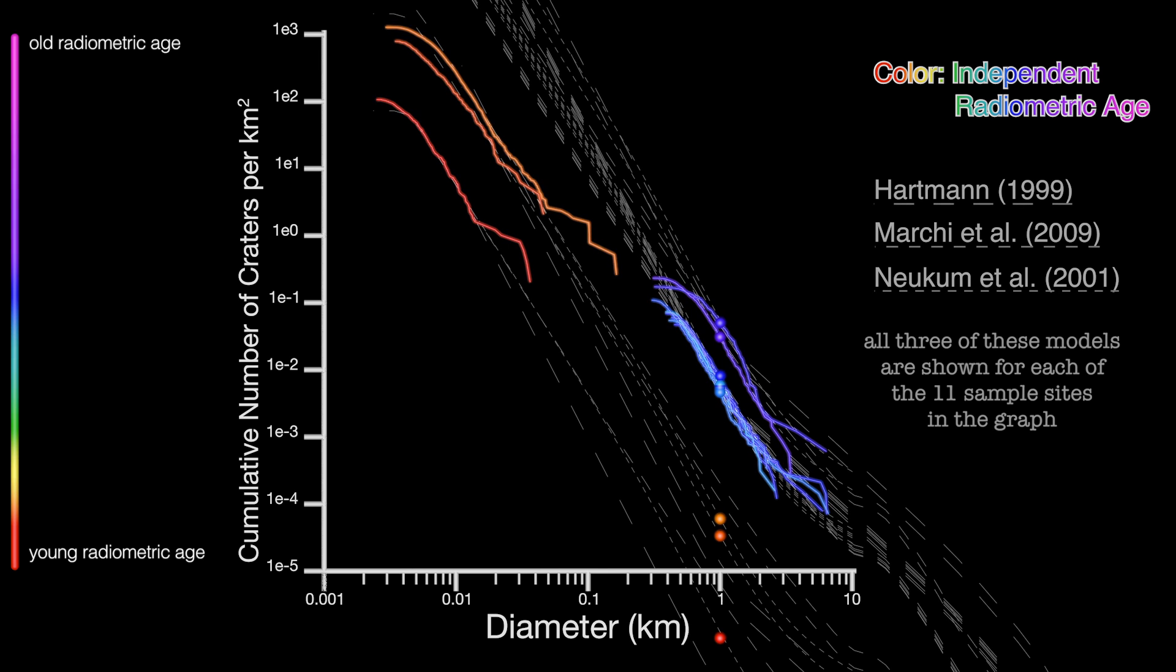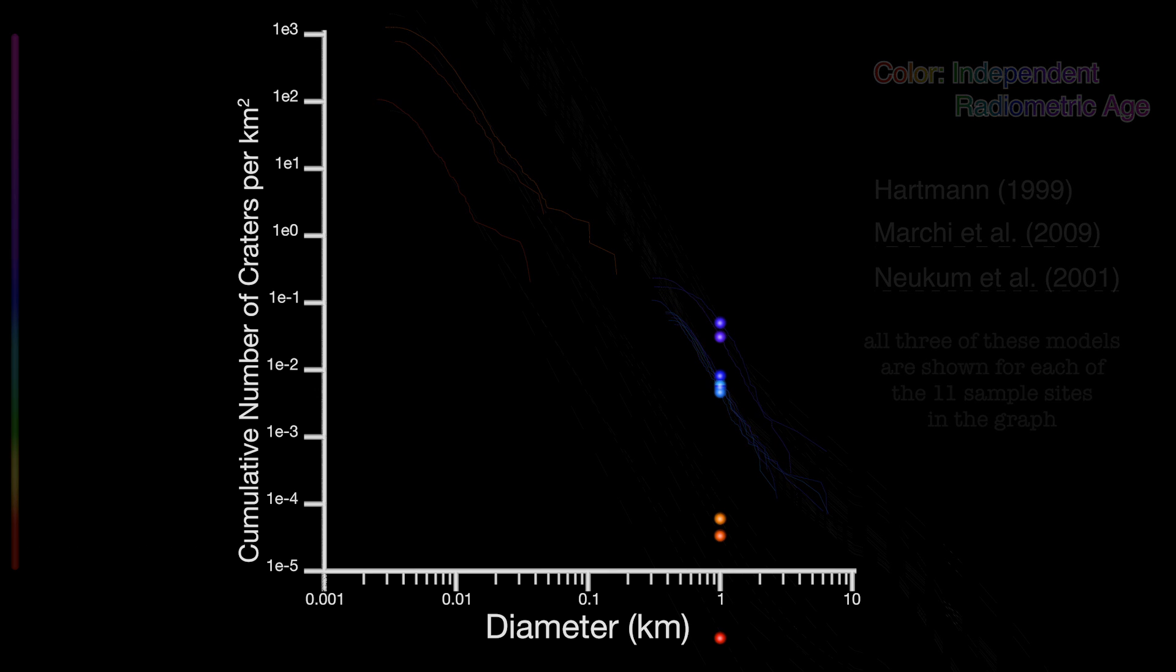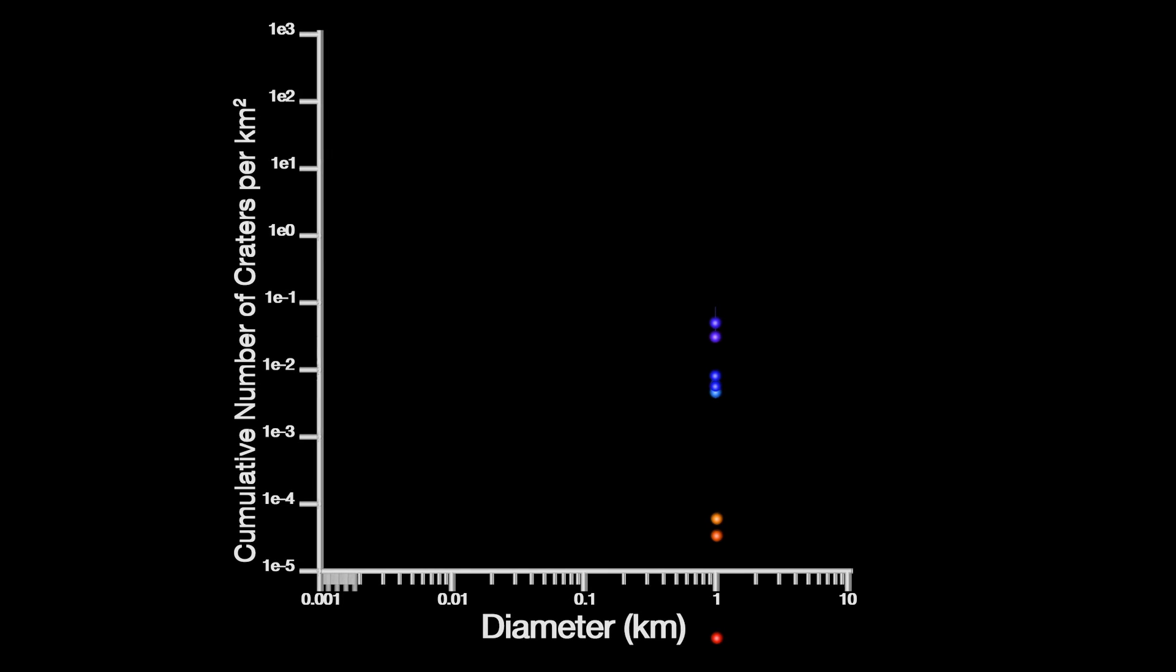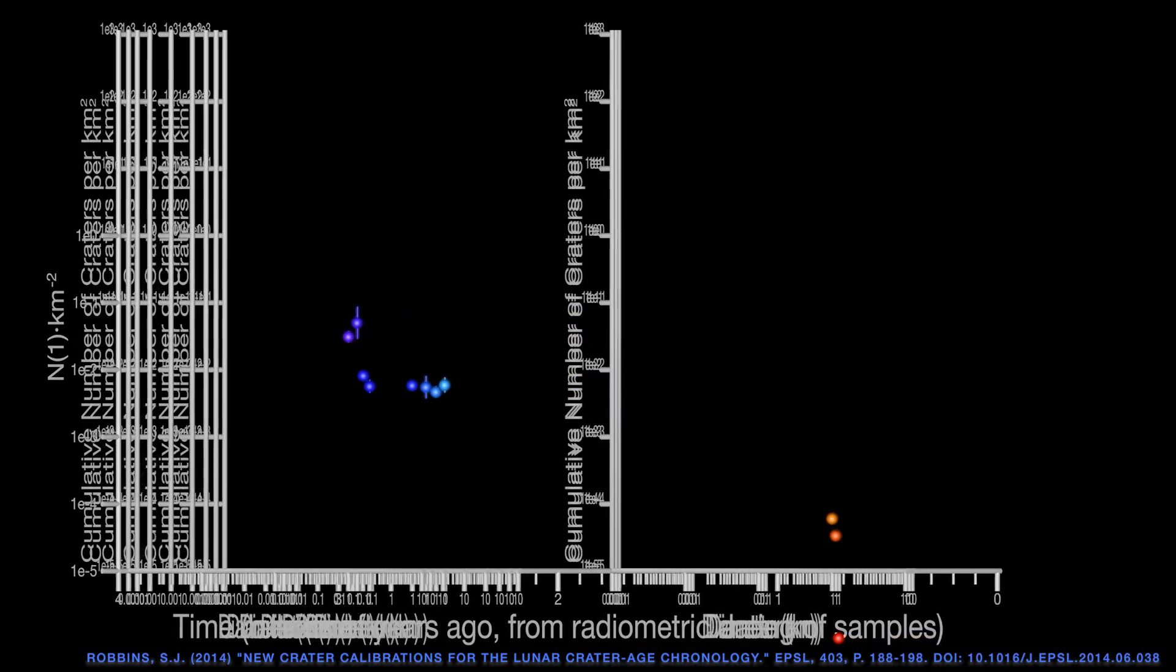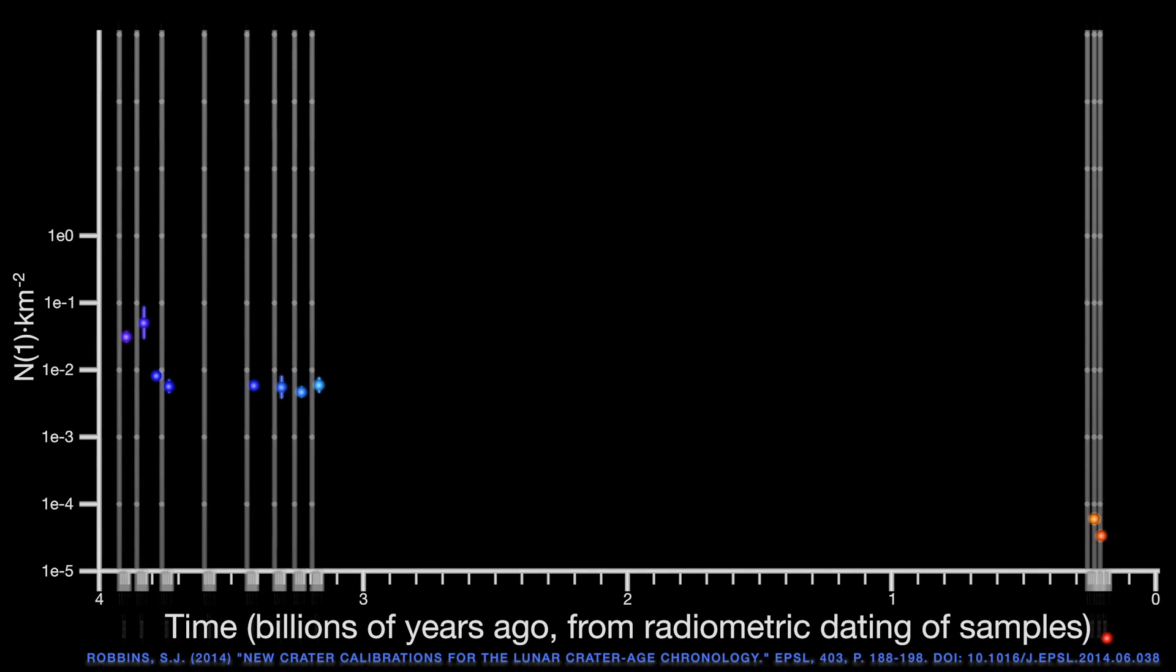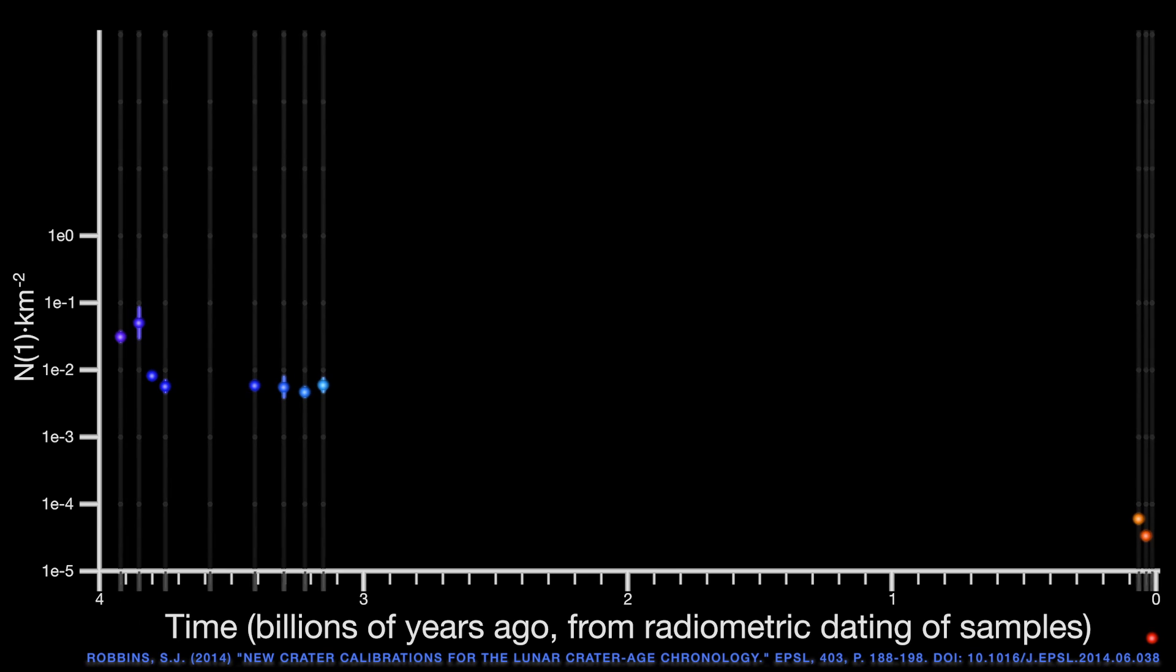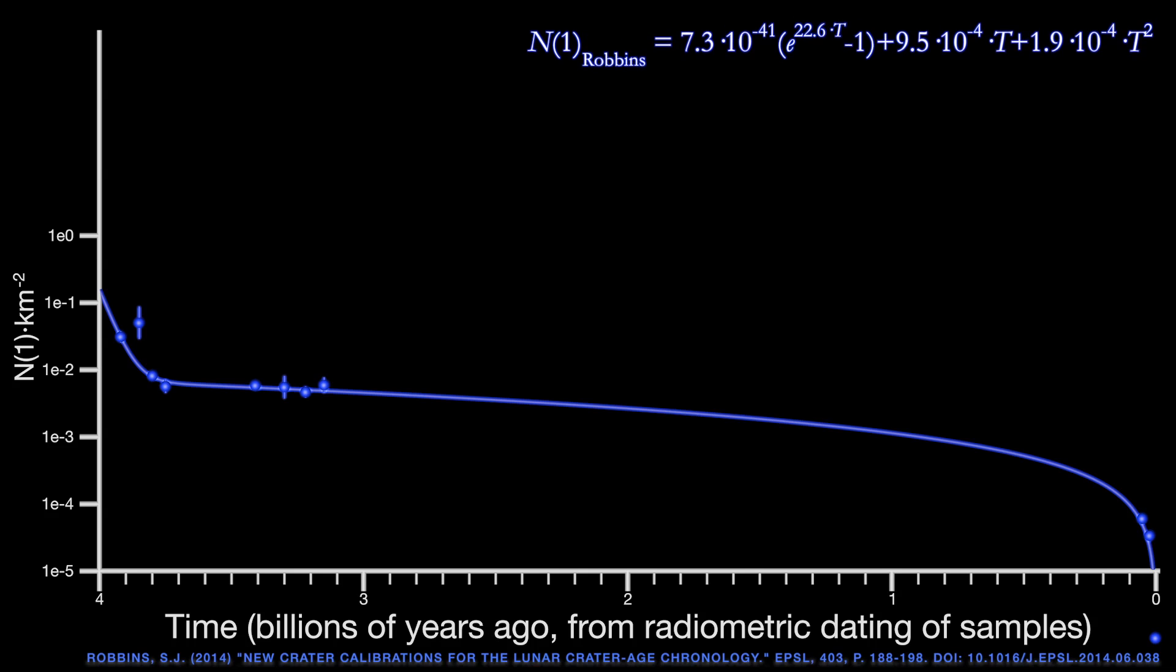With the N1 for each site, either from a model or by directly measuring it, we have the crater spatial density. Since all we care about is N1, we can get rid of the diameter axis, the x-axis on this graph, but we want to keep that N1 value on the y-axis, so we replace the x-axis with radiometric age of the samples collected. Then, you fit a function to the data. This function, the Lunar Chronology function, means that if you measure the spatial density of craters anywhere on the surface and find N1, you can use this chronology function to estimate the age.